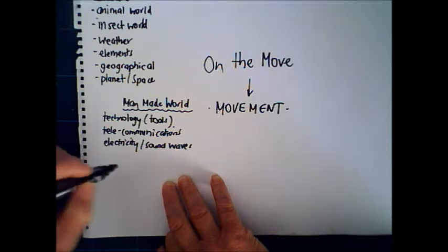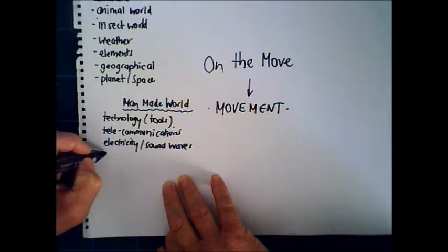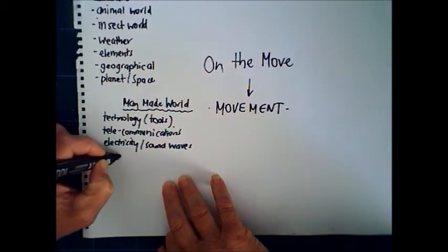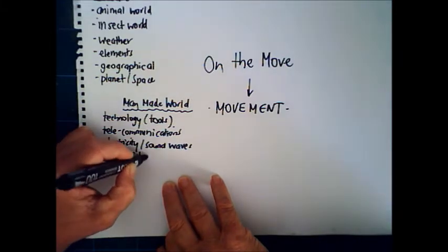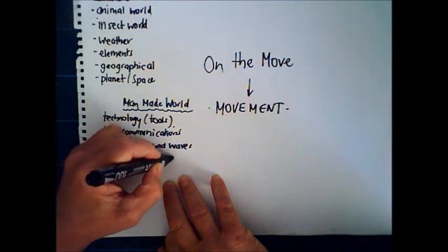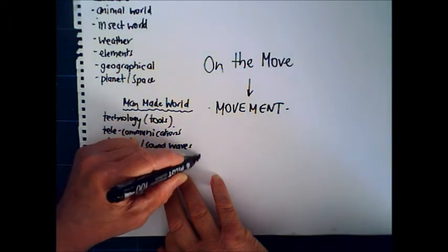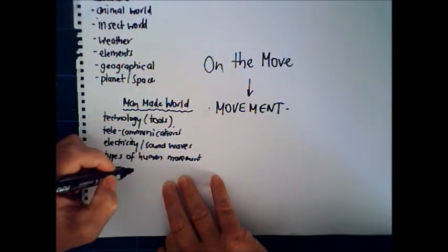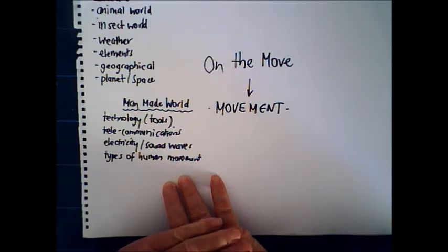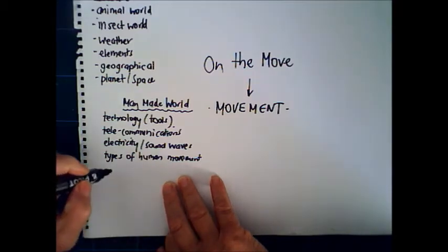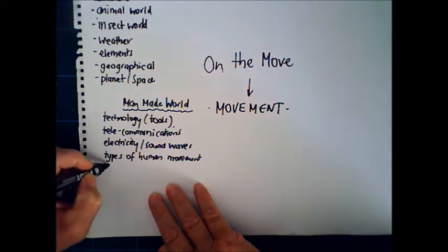Types of human movement. How do we move? Well, some people crawl, babies crawl. Old people have to use a walking stick. Sometimes people in a wheelchair. Some people dance, some people jump. All sorts of movement, dancing and movement and stuff like that. Transport.